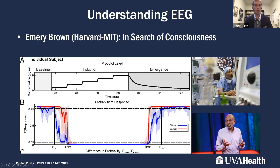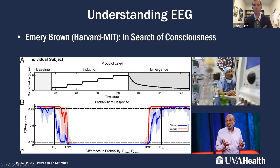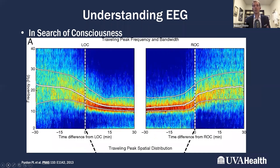Dr. Brown has done work where he takes volunteers, puts them on a propofol infusion, and measures when they lose consciousness based on their ability to respond to verbal cues and clicking sounds. First, response to clicks goes, then they start ignoring people talking to them, and then they've lost consciousness. The propofol is turned off, and first they respond to voice, then clicks — using this algorithm while measuring EEG to define what consciousness looks like under anesthesia. This is the compressed spectral array available on many processed EEG monitors, shown at 30 minutes prior to loss of consciousness.